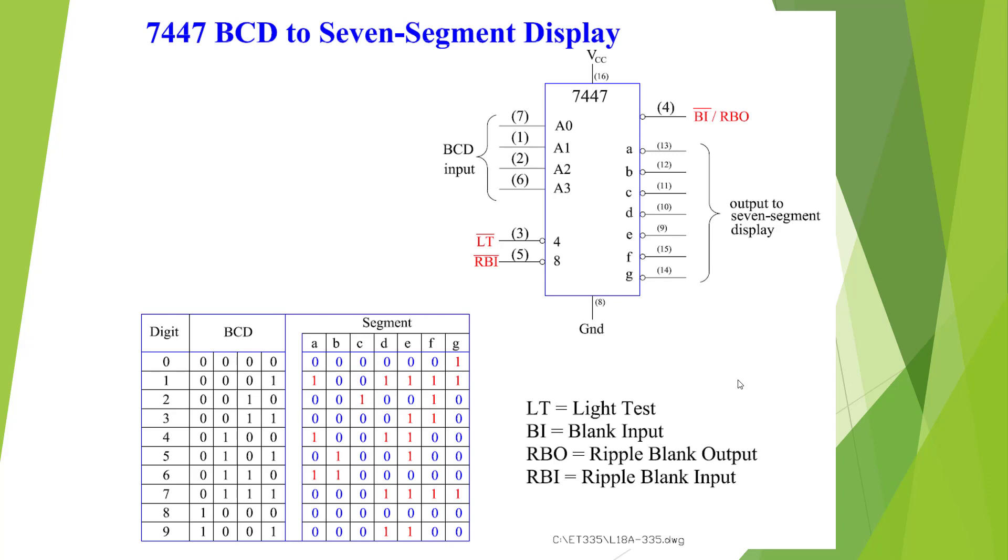Here's a diagram of the 7447 device, showing some of the functions it can do. On pin 3, if we pull it low, LT means light test. All 7 segments will light up. It's a way to test the LEDs.